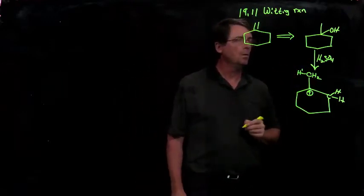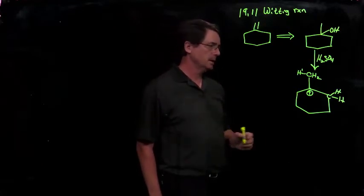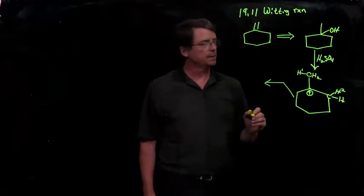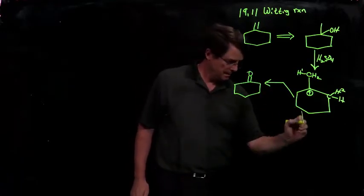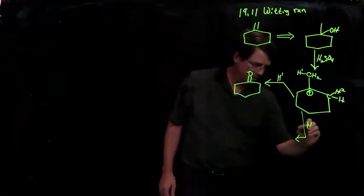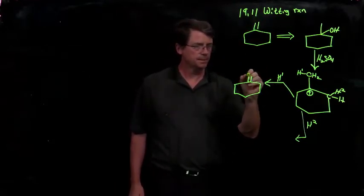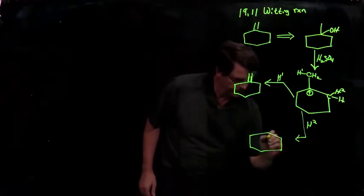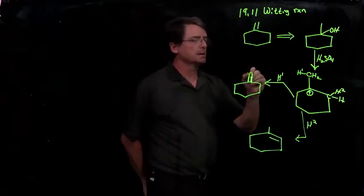This one I'll call one. If we lose H1, we would produce the desired alkene, but if we lose H2, we would produce a different alkene. So we could lose H1, that would produce the desired alkene, but if we lose H2, so that's the H1 pathway. If we go the H2 pathway, no carbonyl there, just a CH2, we produce this endocyclic instead of exocyclic double bond.